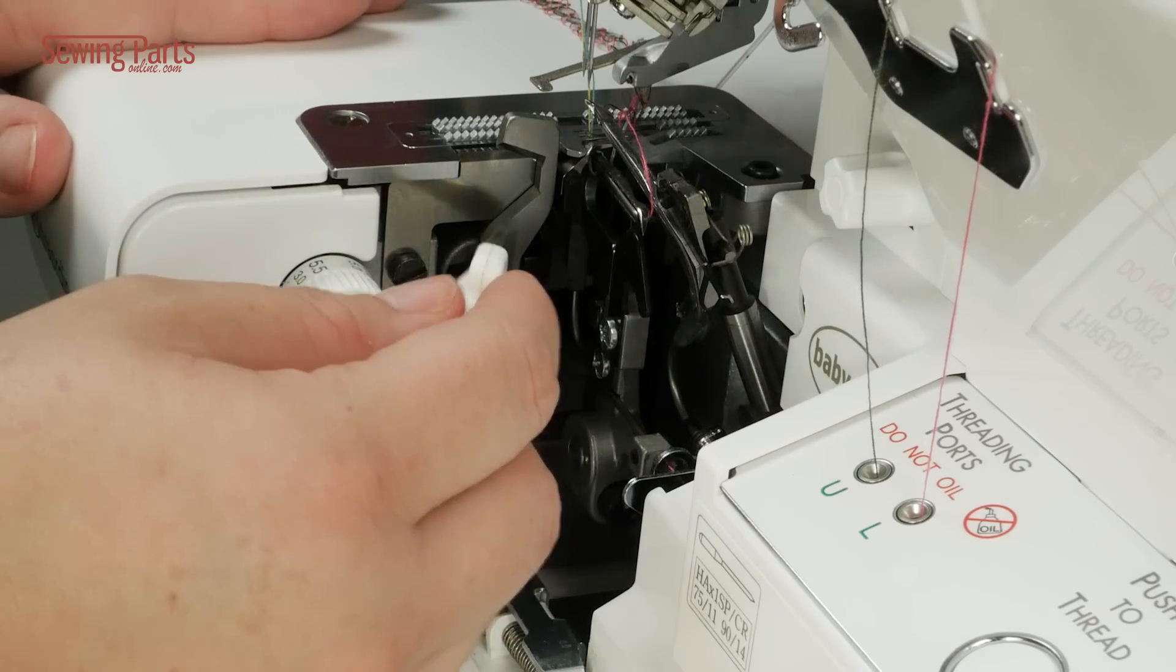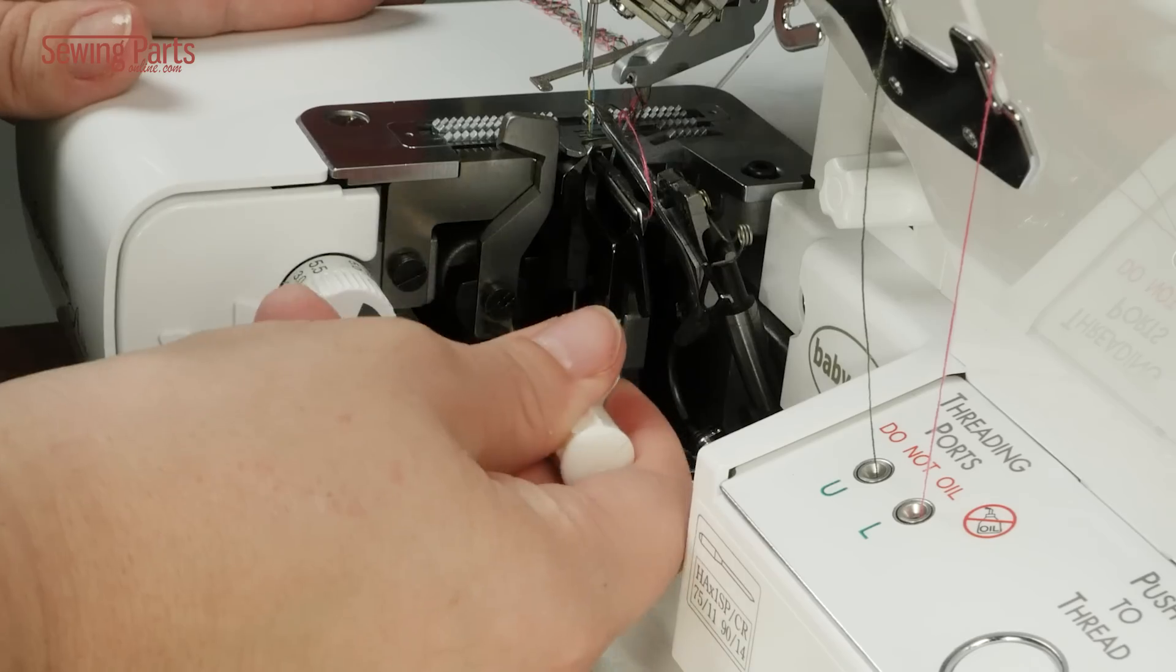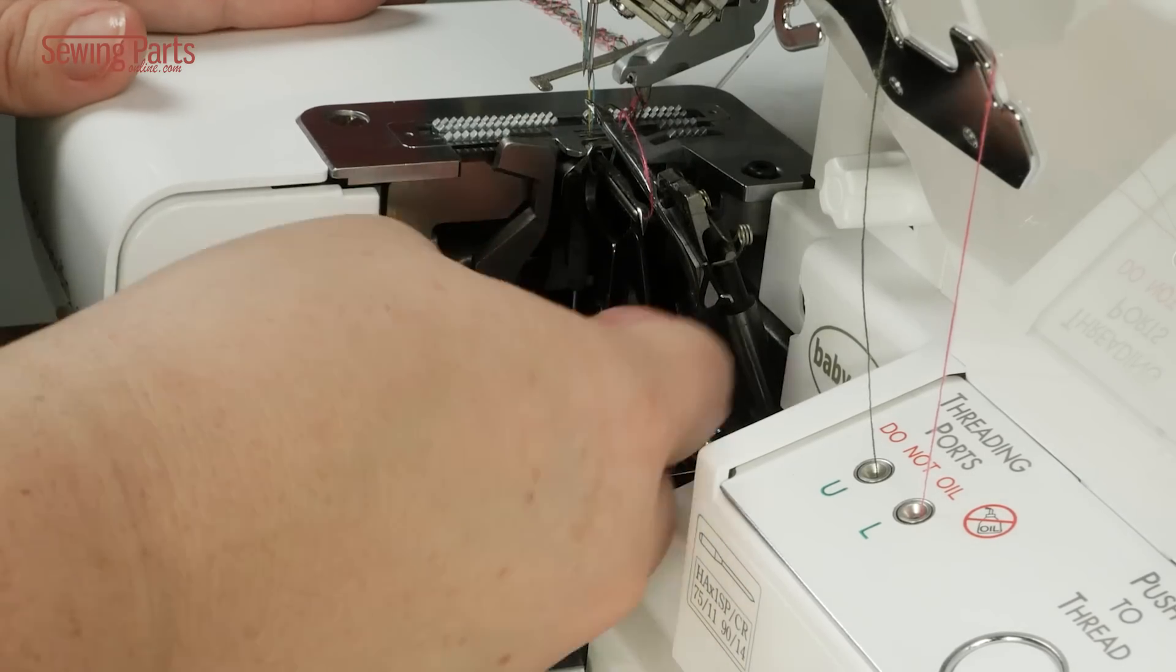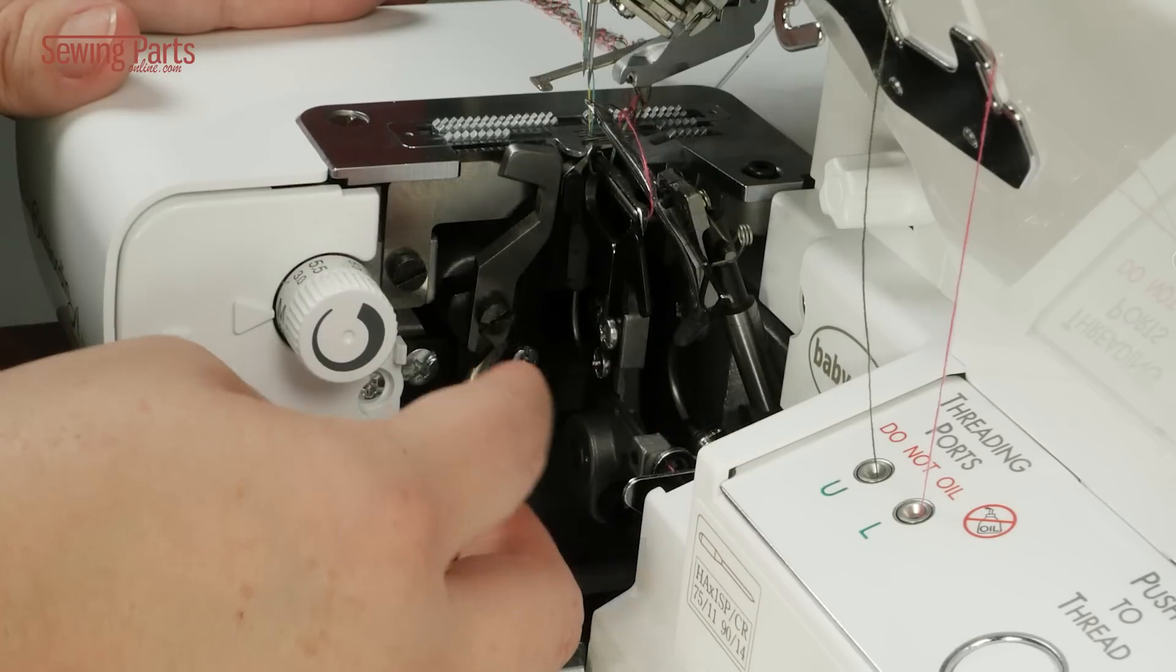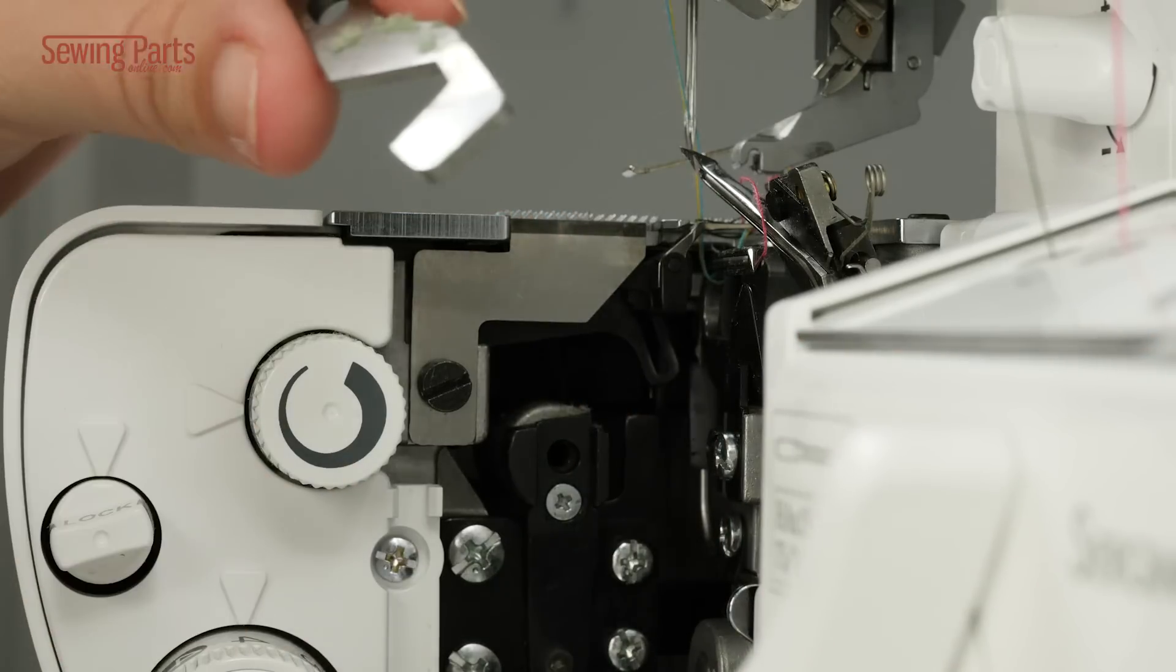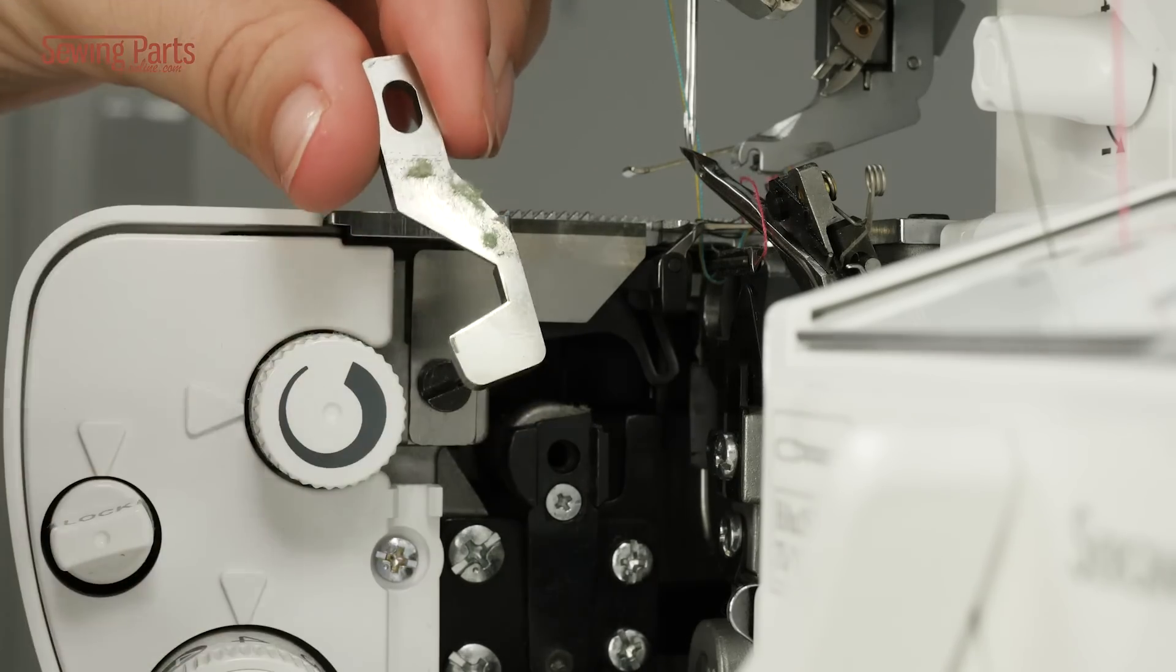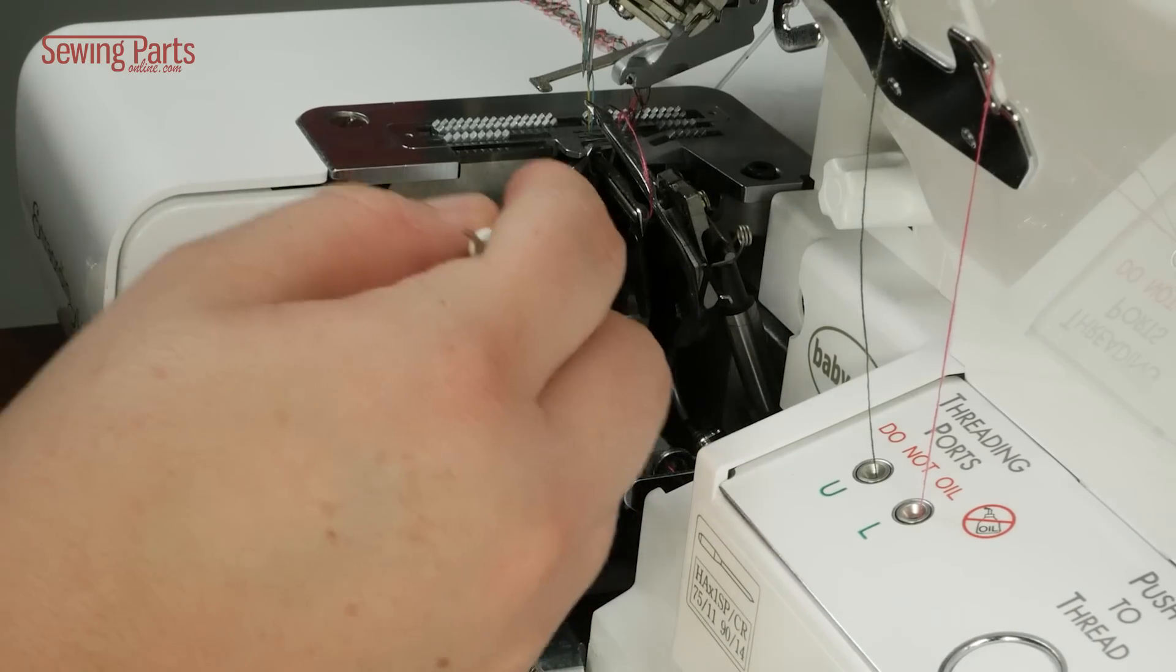So first, let's take off the upper blade or upper knife. This is still very sharp. Sergers can do a lot of damage if you do something wrong, so make sure yours is turned off. And there it goes. Our first blade is gone. Look at all this lint behind there.